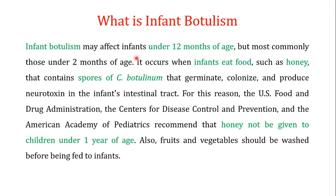Infant botulism affects infants under 12 months of age, but mostly those under two months of age. It occurs when infants eat food such as honey that contains spores of C. botulinum that germinate, colonize, and produce neurotoxin in the infant's intestinal tract. The intestinal tract of these infants has not developed to its full strength, so the spores can germinate, colonize, and produce neurotoxin there.